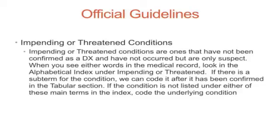Impending or threatened conditions are ones that have not been confirmed as a DX and have not occurred, but are only suspect. When we see either of these words in a medical record, look in the alphabetical index under 'impending' or 'threatened.' If there is a sub-term for the condition, we can code it after it has been confirmed in the tabular section. If the condition is not listed under either of these main terms in the index, code the underlying condition.